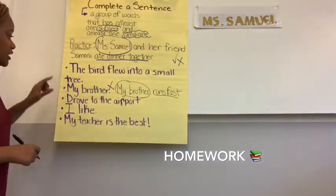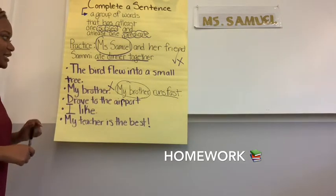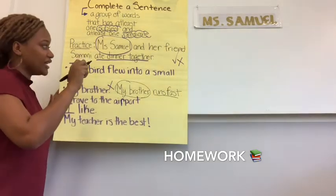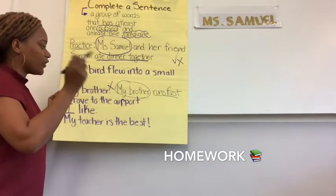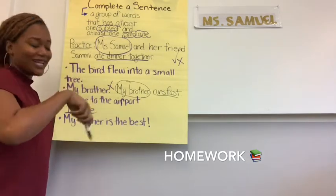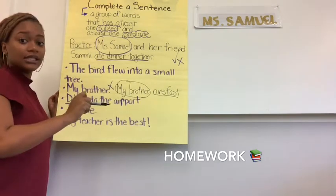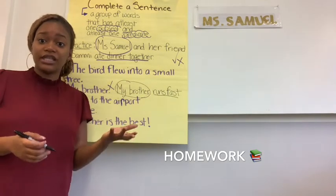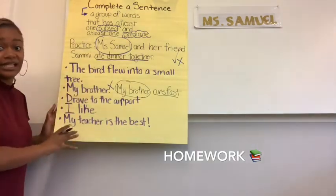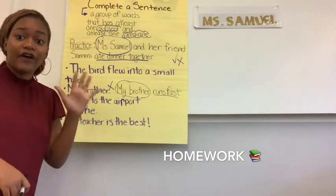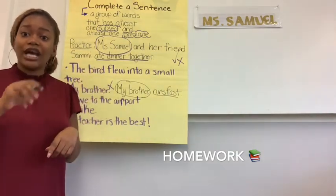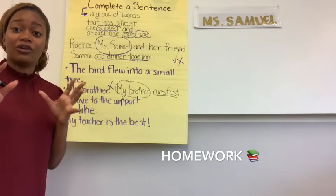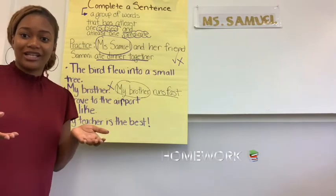So I want you for homework to do these five sentences. You're going to read the sentence, write it down, and give it a check if it is a complete sentence, then move on to the next one. If it's not a complete sentence, give it an X and then complete that sentence. Think about how we can identify complete sentences — it needs a subject and a predicate. You can zoom in if you can't see the sentences. This is your homework for tonight. I expect to see five beautiful sentences with either a check or an X, and if it has an X, I want you to complete that sentence. I cannot wait to see all of the beautiful hard work we've been doing on subjects and predicates combined. Bye!